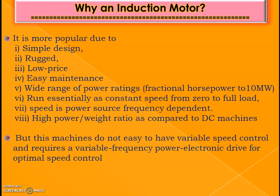It runs essentially at constant speed — from zero to full load the speed regulation is almost zero. The speed is dependent on the power source frequency, so speed is a function of the supply frequency. It also has a high power-to-weight ratio compared to DC machines — for the same power, the DC machine has a larger weight than the induction motor.